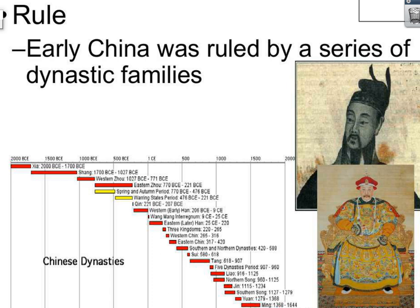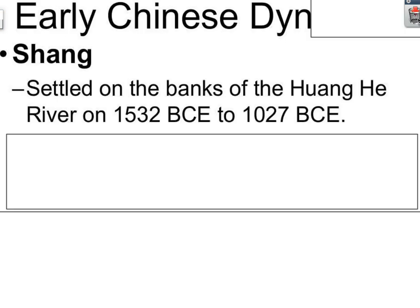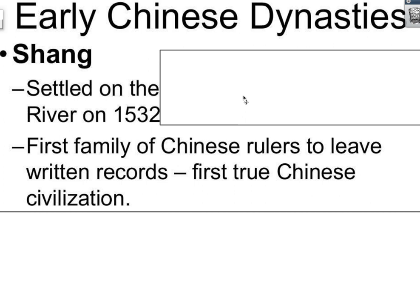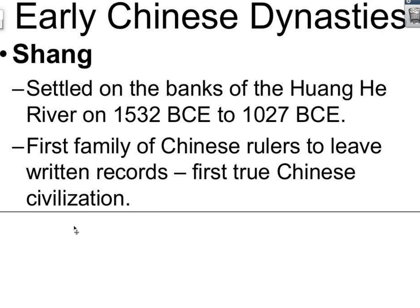As far as rule, politics, and government, early China was ruled by a series of dynastic families — powerful, oftentimes warring families that would compete for the control of China. We're going to talk about the Shang and the Western and Eastern Zhou dynasties today. Shang dynasty — settled on the banks of the Huang He, 1532 to 1027. That's a 500-plus year run. They were the first family of Chinese rulers to leave written records, which is why we're looking at them. They are considered by some historians, not all, the first true Chinese civilization.